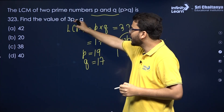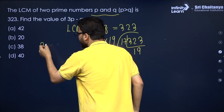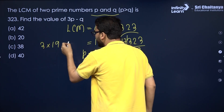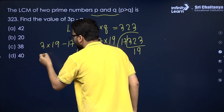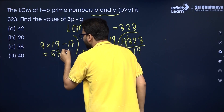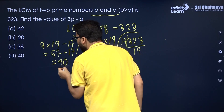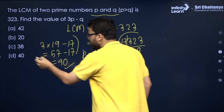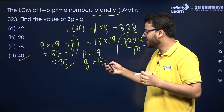Now we have to find the value of 3P minus Q. So 3 into 19 minus 17 — let us simplify this. This is 57 minus 17, which is equal to 40. Therefore, 40 is the answer — that is option D. I hope it is clear. Let us take the next question.